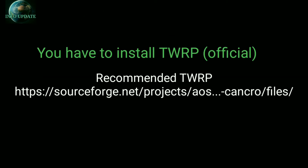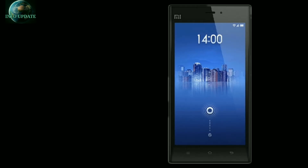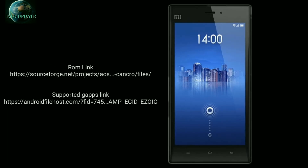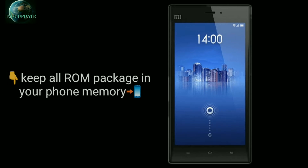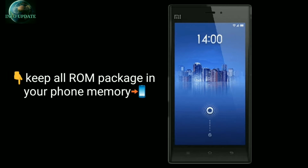At first, you have to install TWRP from the official site as recommended for your phone. Download all the ROM packages from the link given in the description. Keep all the packages in your phone memory, and now reboot into recovery mode.